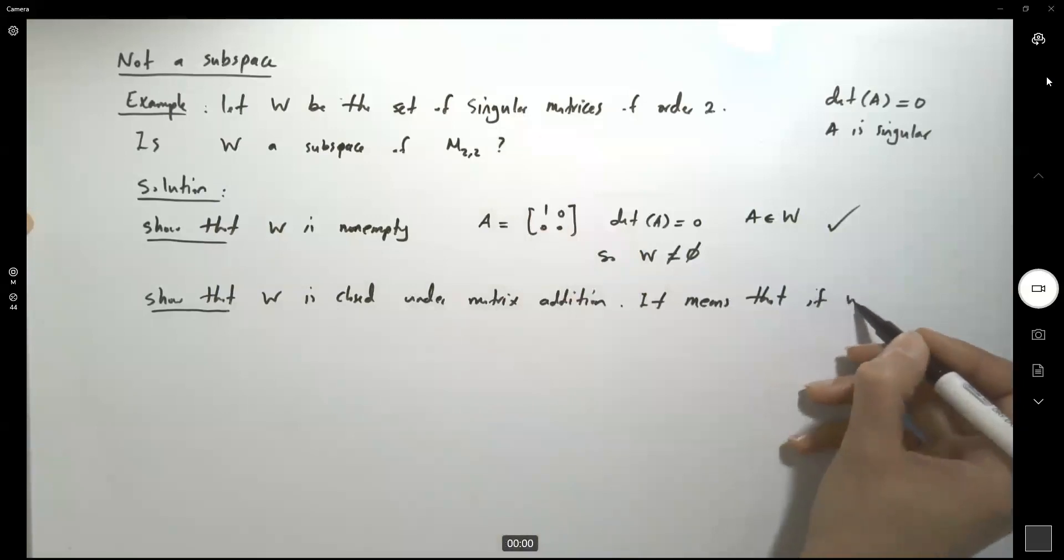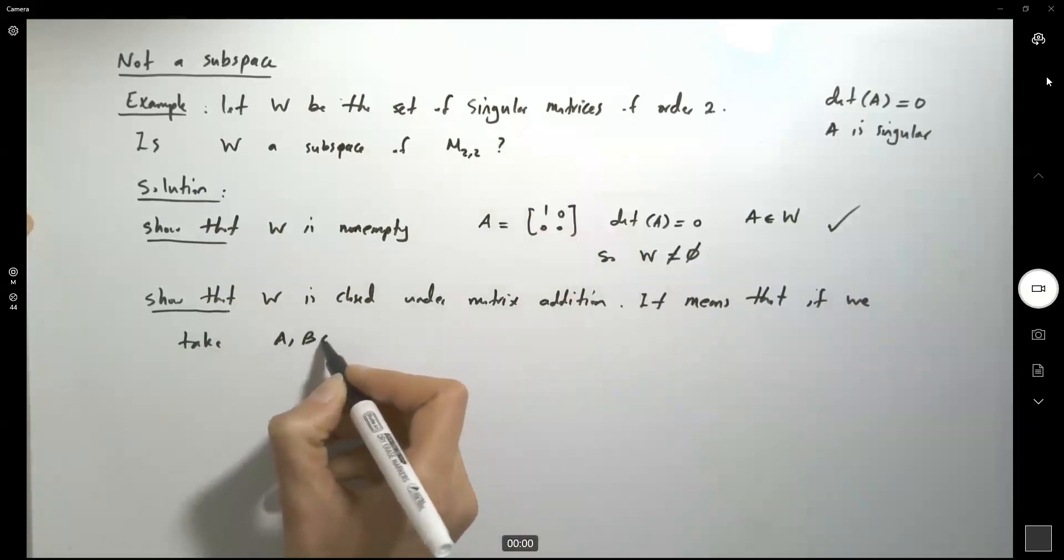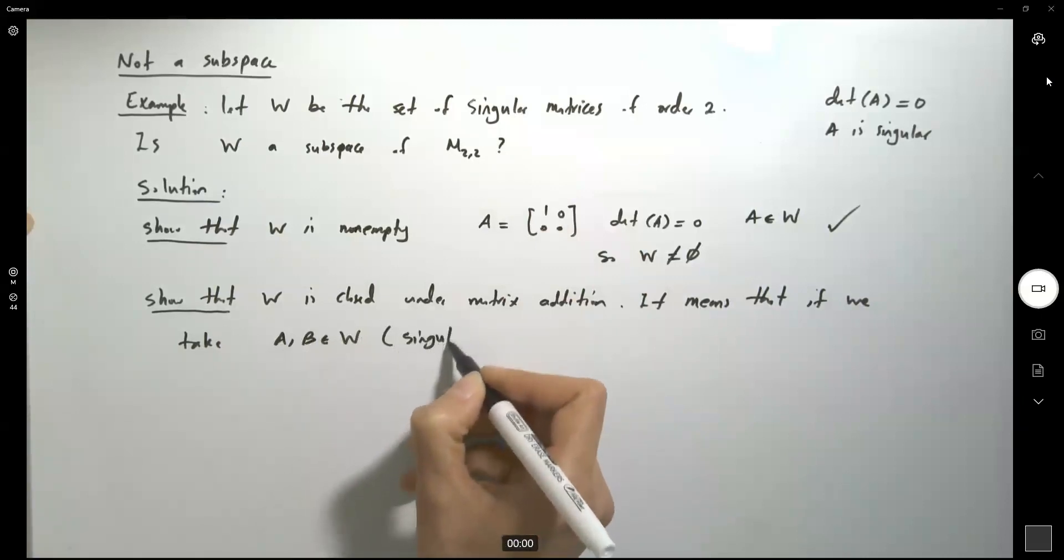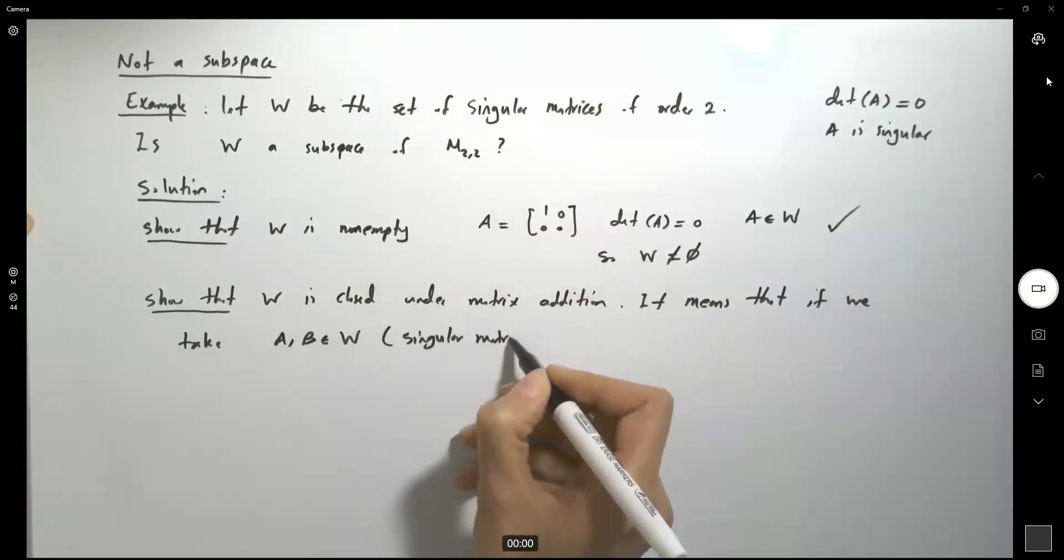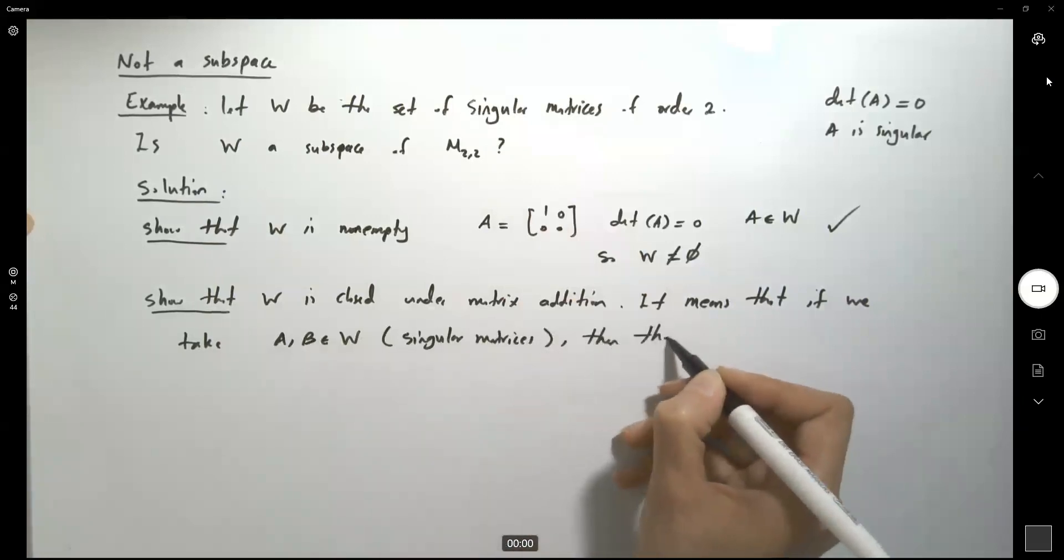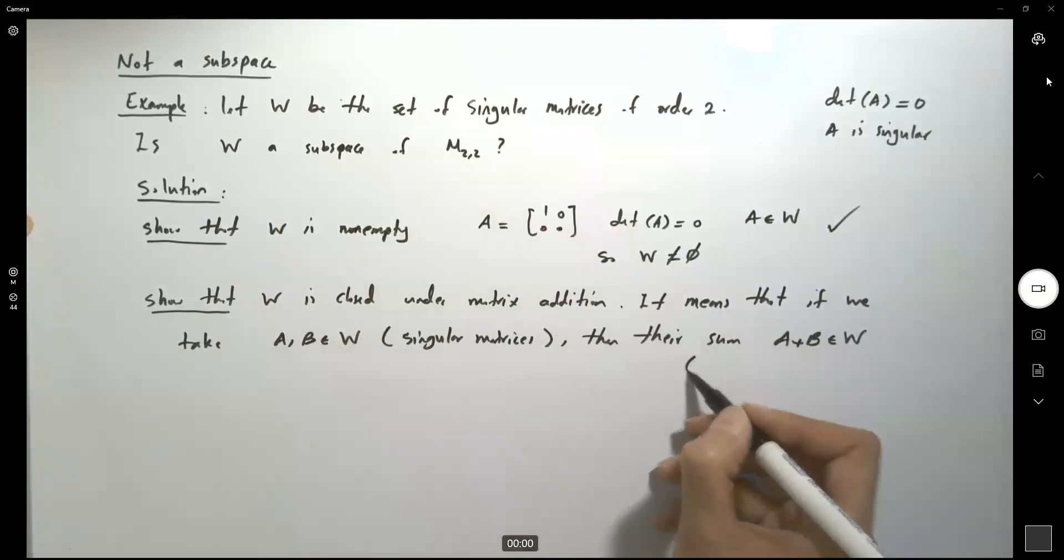if we take A and B from W, singular matrices, then their sum A plus B must be in W, or A plus B must be singular.